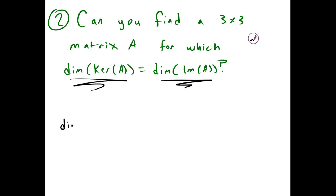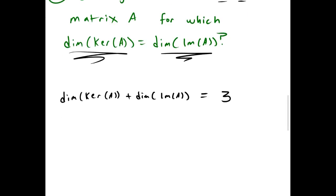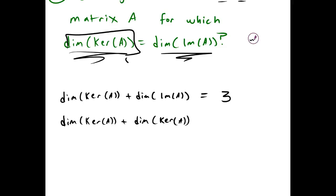The rank-nullity theorem tells us that the nullity plus the rank has to equal the dimension of the domain space. Since we have a 3 by 3 matrix, that dimension is going to be 3. So if the dimension of the kernel equaled the dimension of the image, we could write the dimension of the kernel of A plus the dimension of the kernel of A, substituting the dimension of the kernel for the dimension of the image, because they are equal.